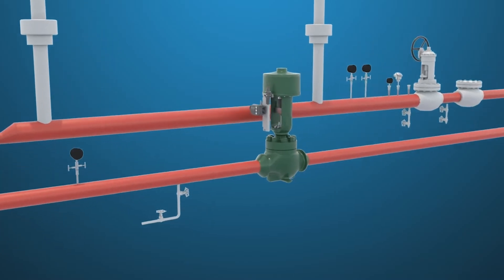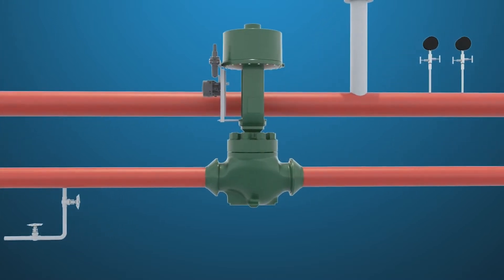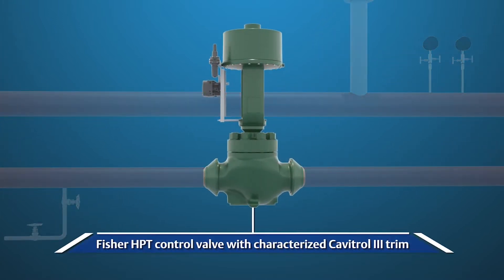When a single valve is used, a special characterized cage is required to prevent cavitation damage. The lower travels of the cage use anti-cavitation trim for the startup and low load conditions. The higher travels of the cage use larger drilled holes or windows to provide the flow rates needed for normal operation.